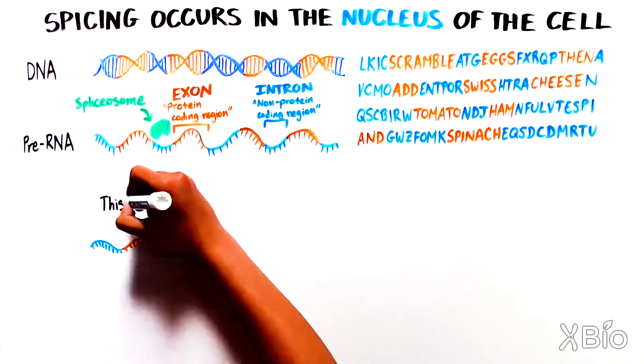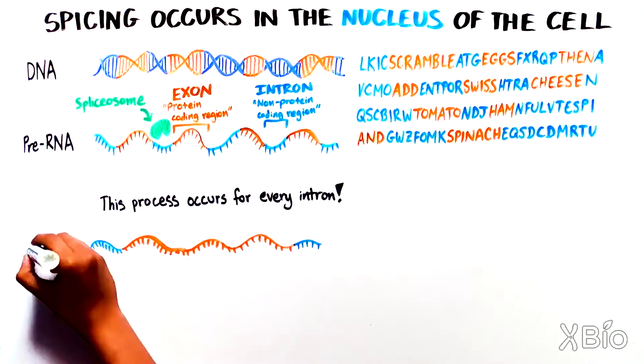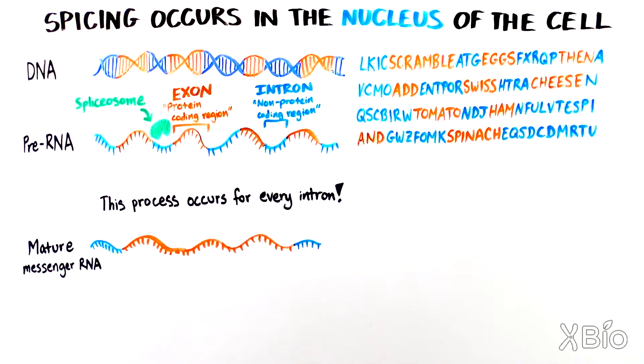This process occurs for all the introns in a given RNA. Some genes have no introns, while others have hundreds. The final spliced product is a mature messenger RNA, or in the case of your brunch, an omelette with Swiss cheese, tomato, ham, and spinach.